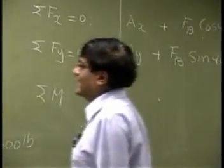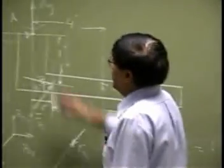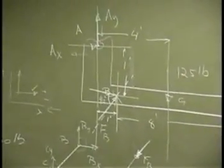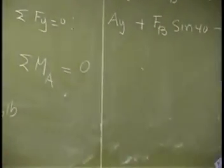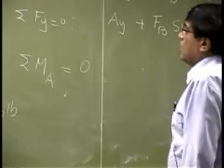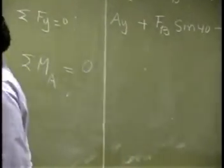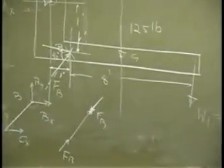Now in this case, a good choice will be point A, because if you choose point A and you set the moment by that point as 0, then AX and AY will not give any moment. I mean the moment due to reaction AX and reaction AY will be 0. The only unknown equation will be this.